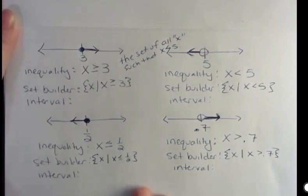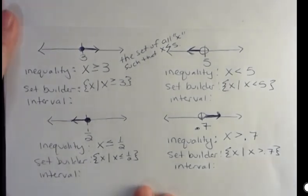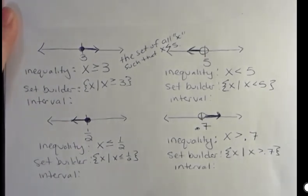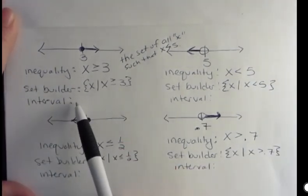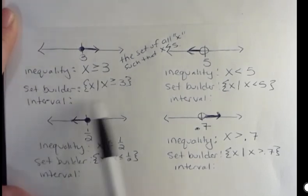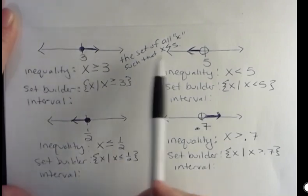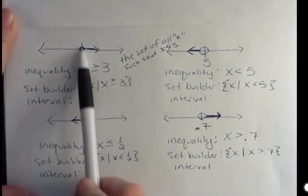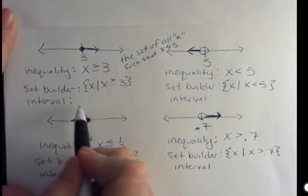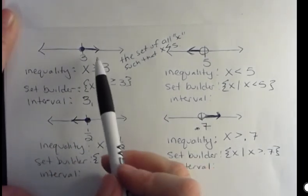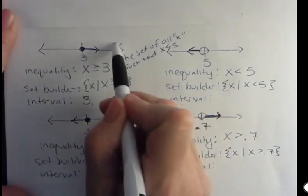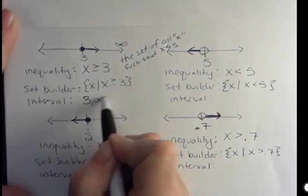Now let's talk about interval notation, because interval notation is something you're going to use, especially for those of you going on to Math 99 and higher math. Interval notation will become a part of your math life. In interval notation, what we're interested in is what is our leftmost point and what is our rightmost point on our graph — always left and then right. On this graph, the leftmost point, the one furthest to the left, is 3. And what's the rightmost point? Well, the rightmost point is infinity, because we're going forever to the right.